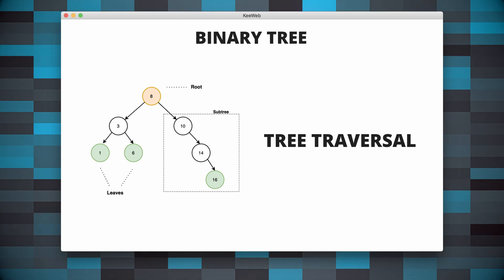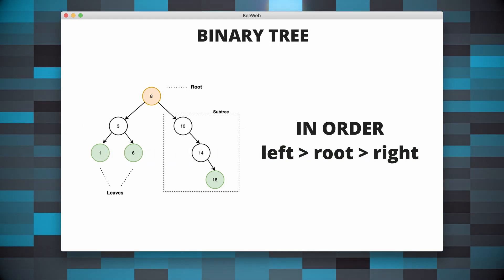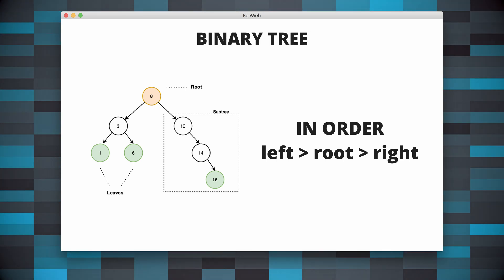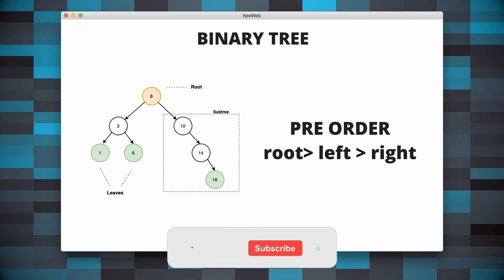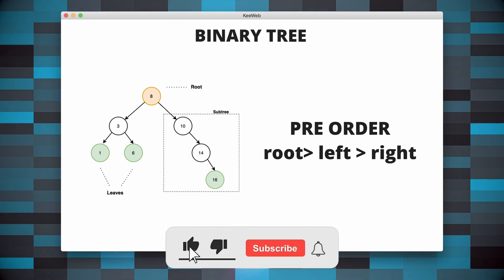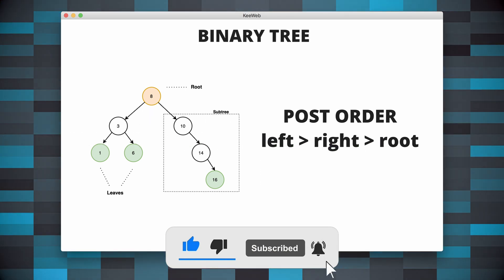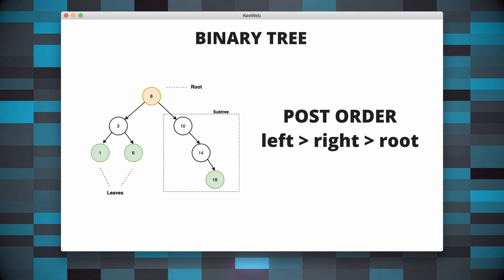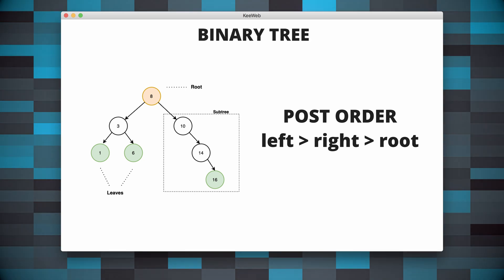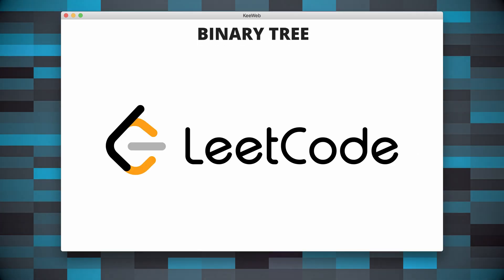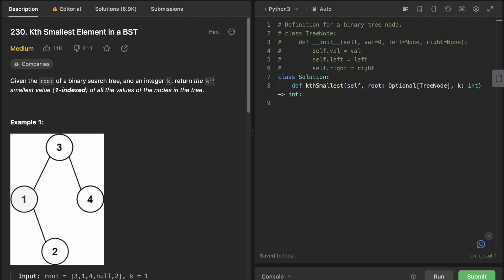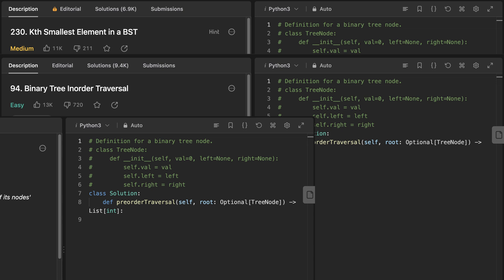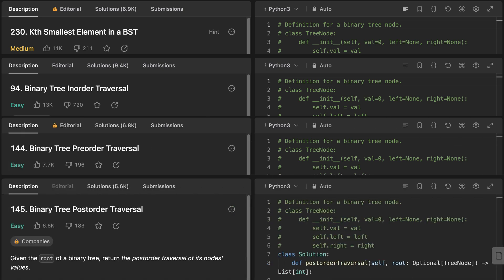Traversal simply refers to the operation where we visit all the nodes of the binary tree in a specific order. The most common traversal methods are in-order, where we visit the left child, the root node, and then the right child; pre-order, where we first visit the root, the left child, and in the end the right child; and post-order, where we first visit the left child, then we move on to the right child, and in the end we visit the root. Some good LeetCode questions that use binary search are Kth Smallest, In-Order, Pre-Order, and Post-Order. I suggest you go through these questions and try to actually solve them.